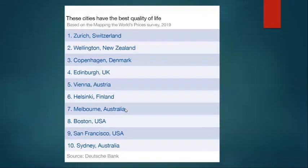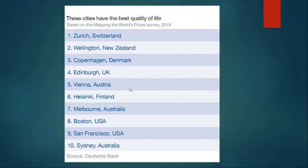Most definitely, quality of life is another attribute. This includes accessibility to public transit, a safe environment and safe streets, good health care, and efficient and honest local government. A reputation for corruption, pollution, or crime will damage a city's competitive power. Based on the 2019 survey, some of the cities with the best quality of life include Zurich, Wellington, Copenhagen, Edinburgh, Vienna, Helsinki, Melbourne, Boston, San Francisco, and Sydney.